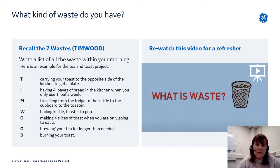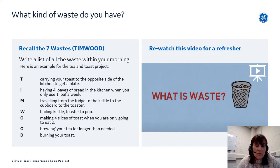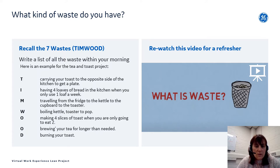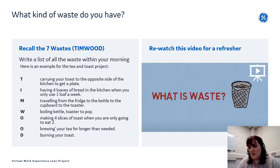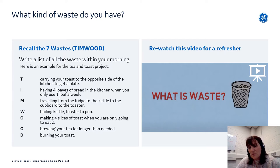The 'M' is Motion — traveling from the fridge to the kettle to the cupboard to the toaster and back. You can see my spaghetti diagram had a lot of motion. 'W' is Waiting — waiting for the kettle to boil or the toaster to pop. The two O's are Over-processing and Over-producing — for example, making four slices of toast when I'm only going to eat two, or brewing your tea for longer than necessary.